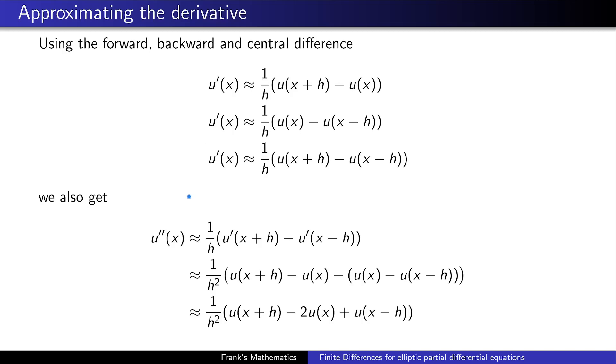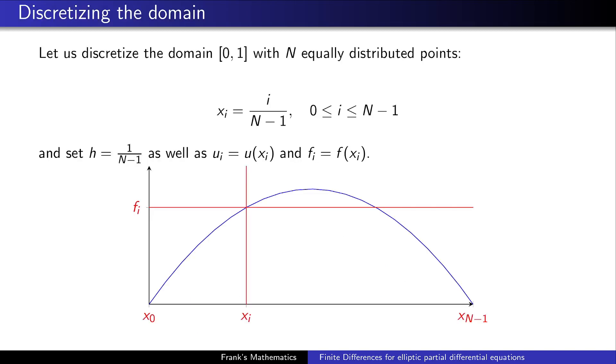What we are going to do now is we want to approximate the second order derivative first by the central difference. So the second derivative transforms to the first order derivative. Now we are approximating u prime at x plus h with the backward difference, which gives these two terms, while the second term is tackled with the forward difference. You can see here you end up exactly with the expression we had before.